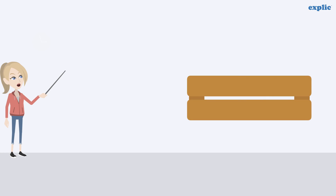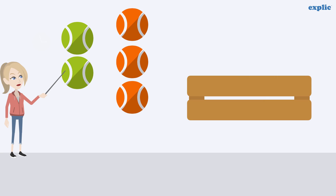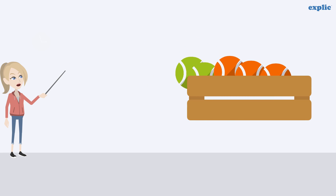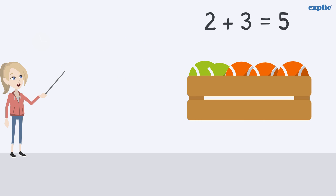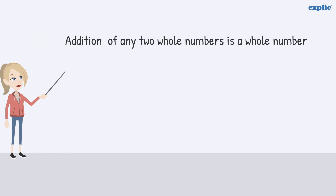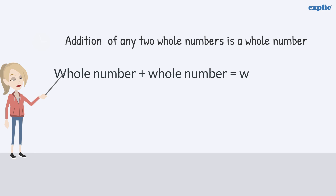If you add whole numbers 2 and 3, we get 5, which is also a whole number. Hence, the addition of any two whole numbers is a whole number. This is called the closure property of addition.